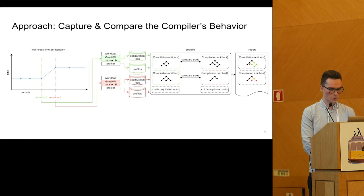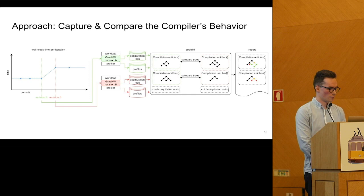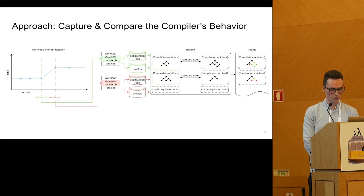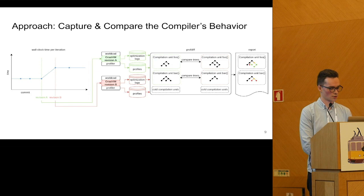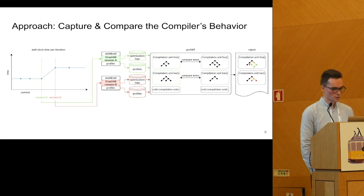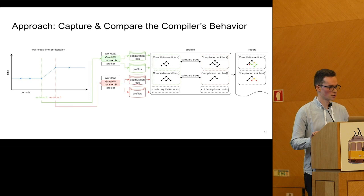Our approach is the following. The idea is simple: we capture and compare the compiler's behavior. Starting from the left, we have some workload on which we regress and we have a revision before and after the regression. What we do is we run the affected workload on both these revisions of the compiler. We attach a profile to the VM which will tell us what are the most frequently executed compilation units — basically what machine code the VM is executing most of the time. We also ask the compiler to produce optimization logs, which is something that we crafted specially for this purpose. The optimization logs contain a tree for each compilation unit, and the tree describes the compiler's behavior — the optimization decisions in that compilation unit.